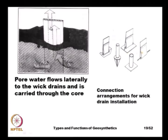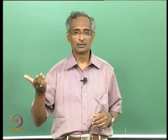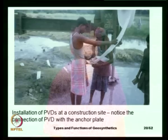The PVD is introduced into the ground by pushing it down with an anchor plate. Water flows through the geotextile filter, enters the highly permeable core, and escapes very quickly. Here we see a schematic illustration of water flowing through the geotextile filter and out through the core.